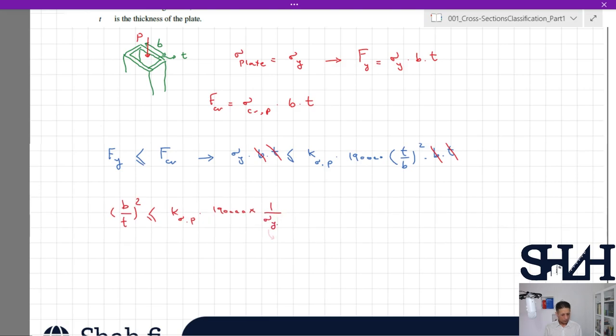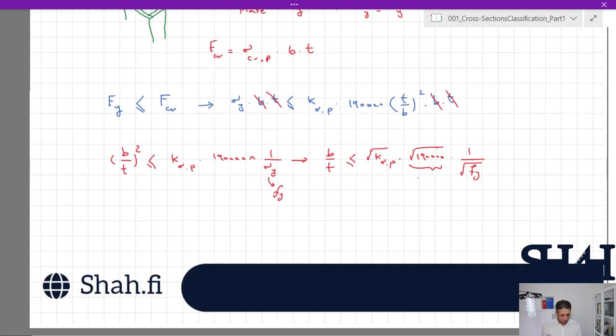One over square root of fy—this value is 436. So it means that b over t needs to be less than square root of k sigma p times 436 divided by square root of fy.